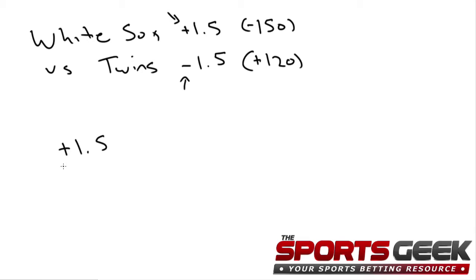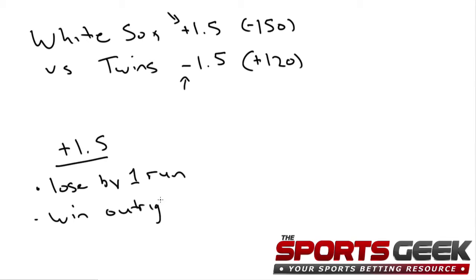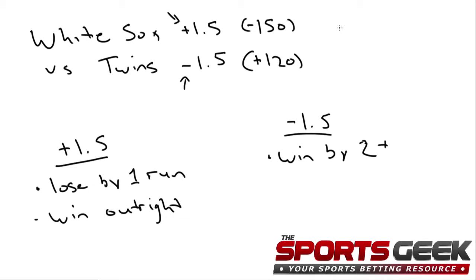When you're taking the plus 1.5 runs, this means that the White Sox can either lose by exactly one run or they could win outright for that to cash. And if you're looking at the Twins negative 1.5, that simply means they have to win by two or more runs in order for that to cash. In this example, if you took the White Sox to win on the money line they'd be the underdogs, but on the run line since they're getting a run they're actually paying negative 150, meaning risk $150 to win $100. Betting on the Twins, they're the favorites on the money line but since they have to win by two or more you're actually getting $120 for every $100 bet.